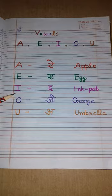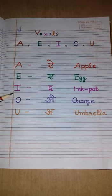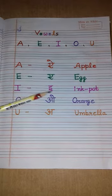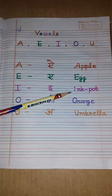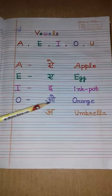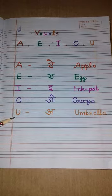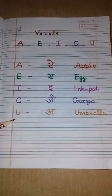The name of the second letter is E, and the sound is 'e' — E, egg! The third vowel is I. The name of this letter is I, and the sound of this letter is 'i' — I, ink pot!